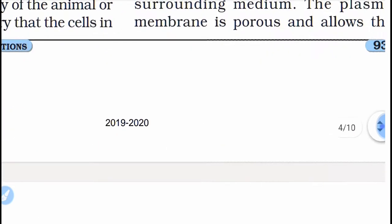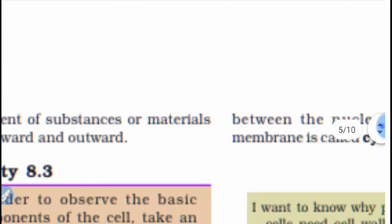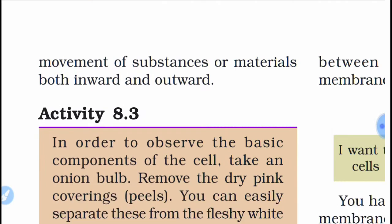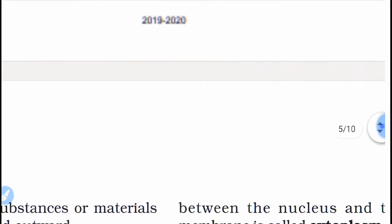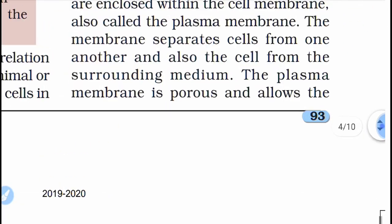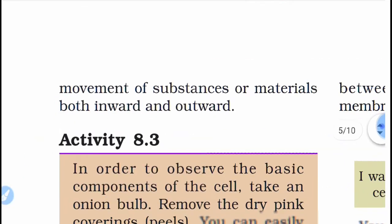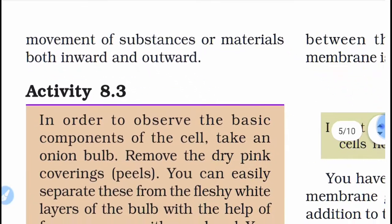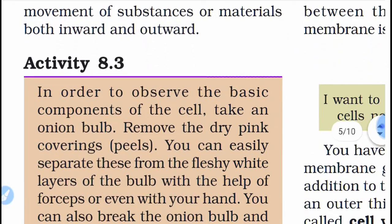The plasma membrane is porous and allows the movement of substances or materials both inward and outward. It means any substance can pass through it in both directions.